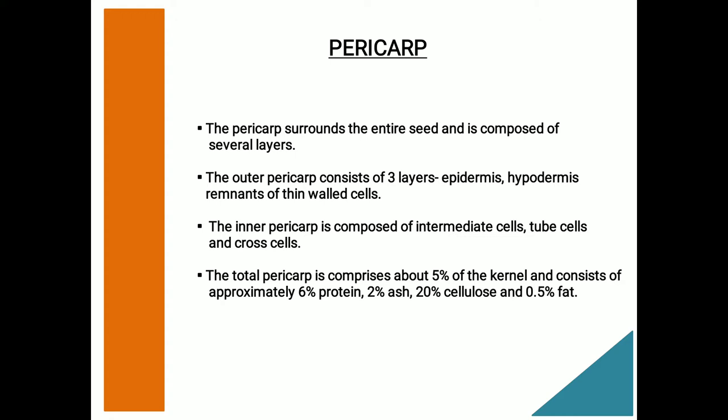The inner pericarp is composed of three types of cells: intermediate cells, cross cells, and tube cells. Neither the intermediate nor tube cells completely cover the kernel. The cross cells are long and cylindrical and have their long axis perpendicular to the long axis of the kernel. The tube cells are similar in size and shape but are not tightly packed and have their long axis parallel to the long axis of the kernel. The total pericarp comprises about 5% of the kernel and consists of about 6% protein, 2% ash, 20% cellulose, and 0.5% fat.